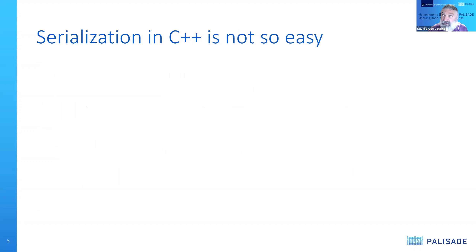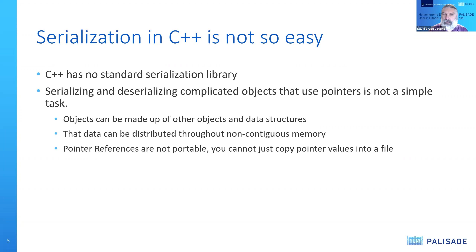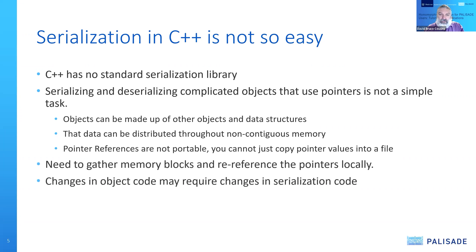Serialization in C++ is not easy. C++ has no standard serialization library, and the serialization and deserialization of complicated objects that use pointers is not a simple task. These objects can be made up of other objects and data structures, and that data can be distributed throughout non-contiguous memory. Pointer references are not portable — the pointer reference you use in your program, if you copied that number and passed it to a separate program, would point to some arbitrary piece of memory. You also need to gather memory blocks and re-reference these pointers when you reconstruct them.